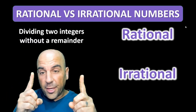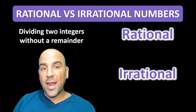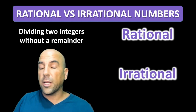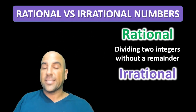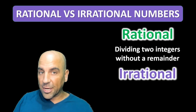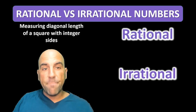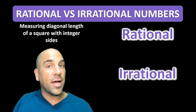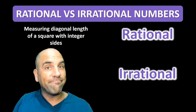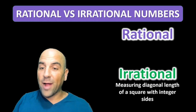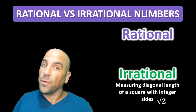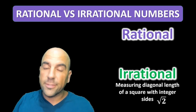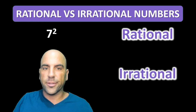Time for a quiz! Dividing two integers without a remainder — is that going to get us a rational or an irrational number? It's going to get you a rational number. Measuring the diagonal length of a square with integer sides? That's irrational, because you're always going to be working with the square root of two, which we just discovered is irrational.